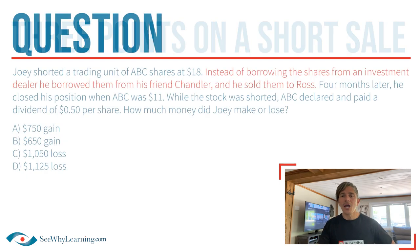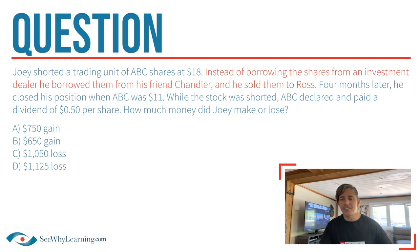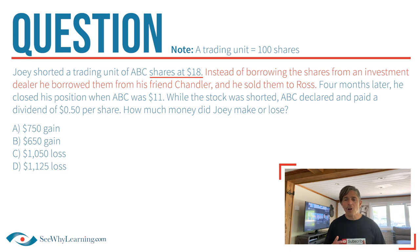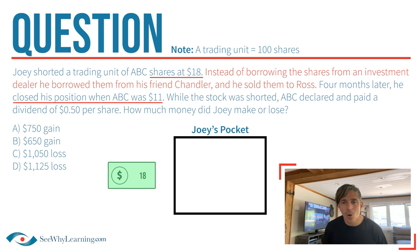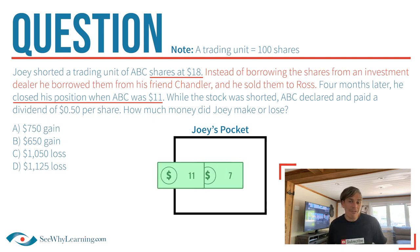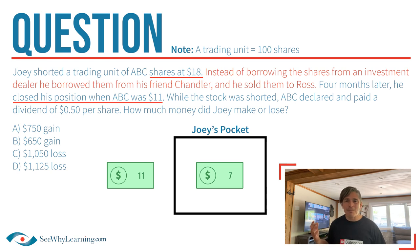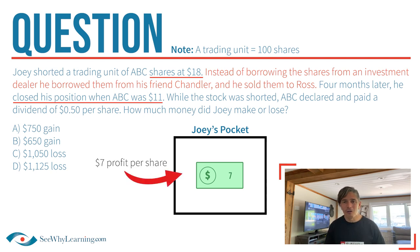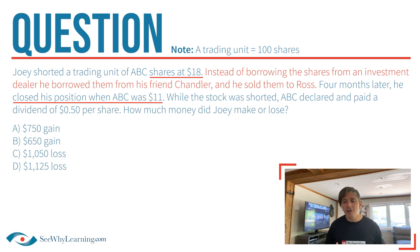Let's take a look at this question together. It says that Joey shorted a trading unit of ABC shares at $18. A trading unit is 100 shares, so Joey shorted 100 ABC shares at $18. Further along in the scenario, we find out he closed the position when ABC was trading at only $11. When he borrowed the shares and sold them for $18, $18 went into his pocket. When he bought the shares back for $11, only $11 came out — so there's still $7 remaining. It looks like he's made $7 per share.